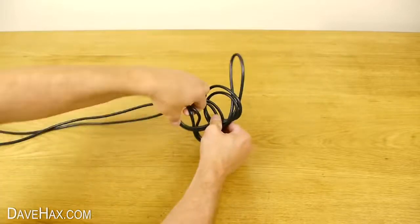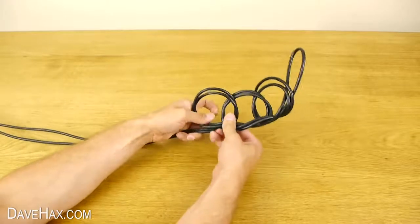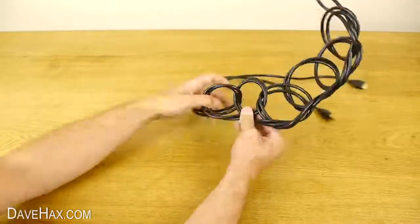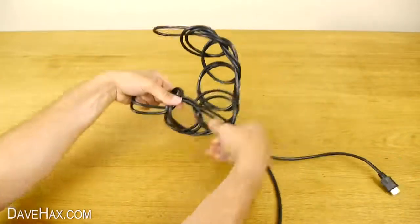When you're done, repeat the process and do exactly the same again. Keep looping the wire through to extend the chain, and you should end up with something that looks like this.